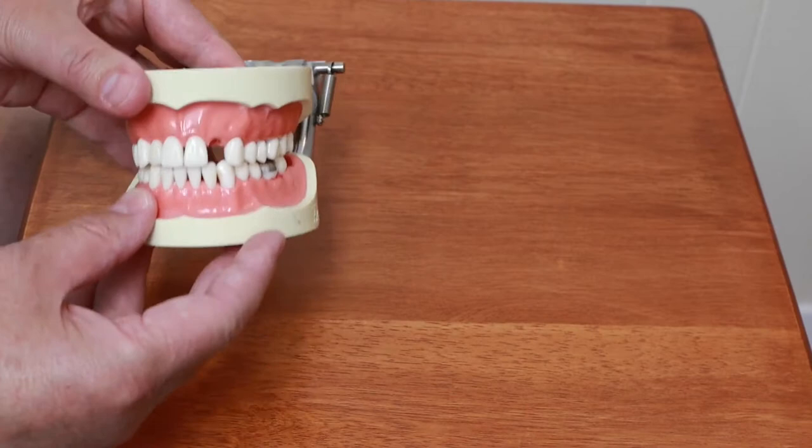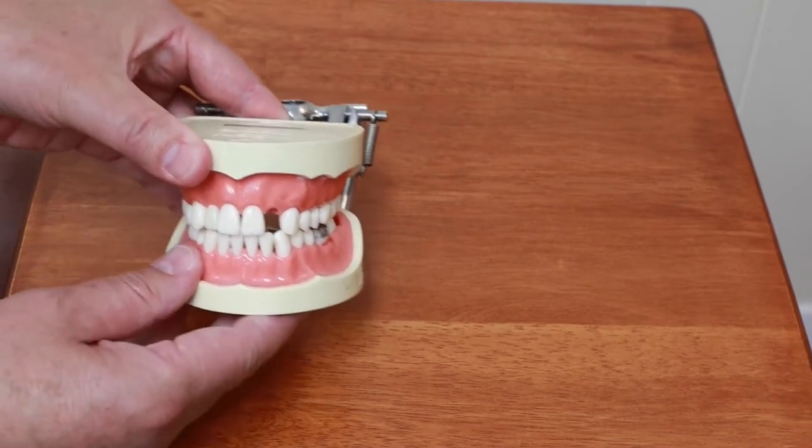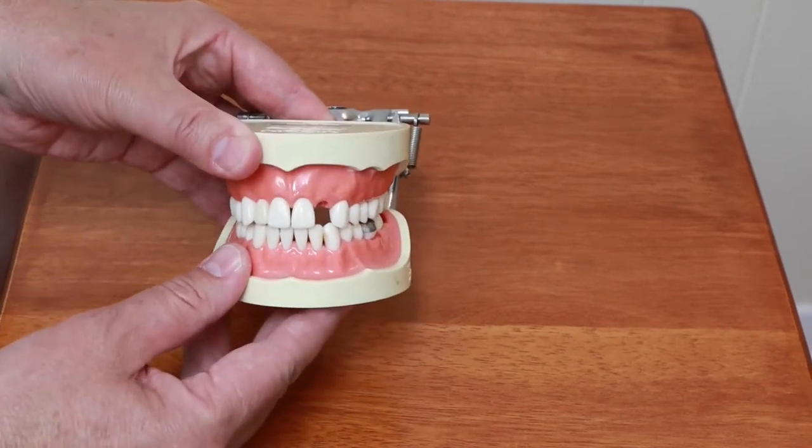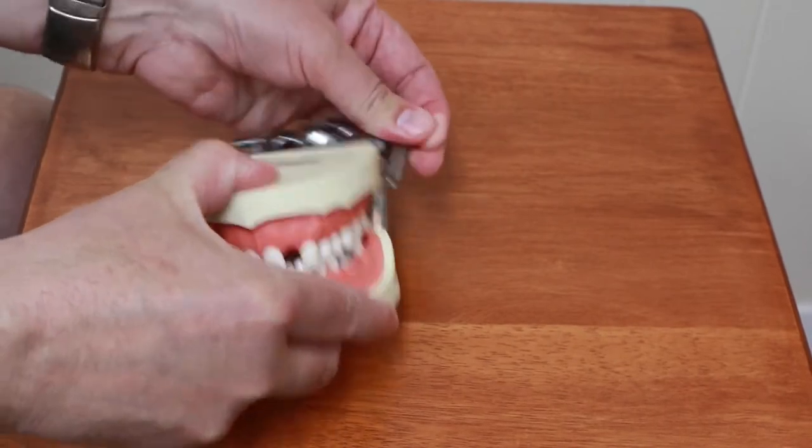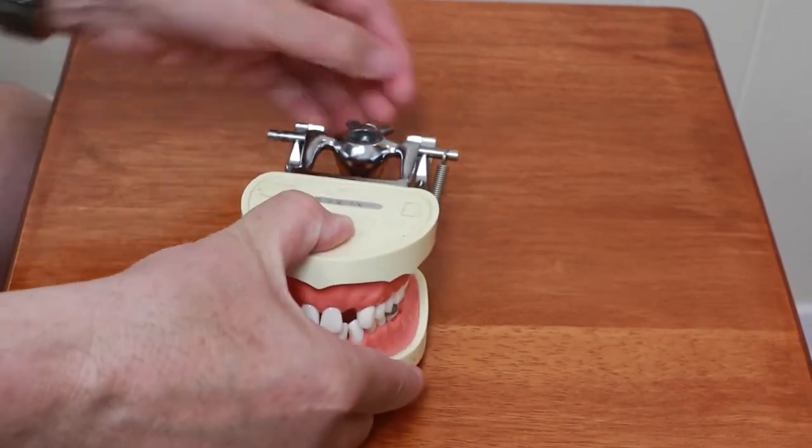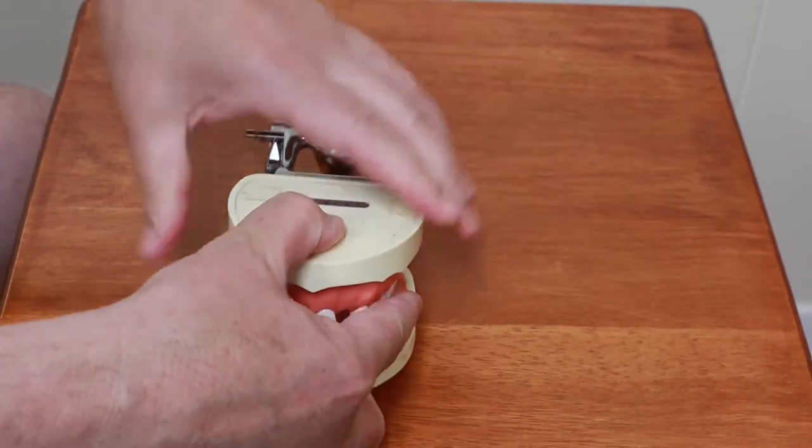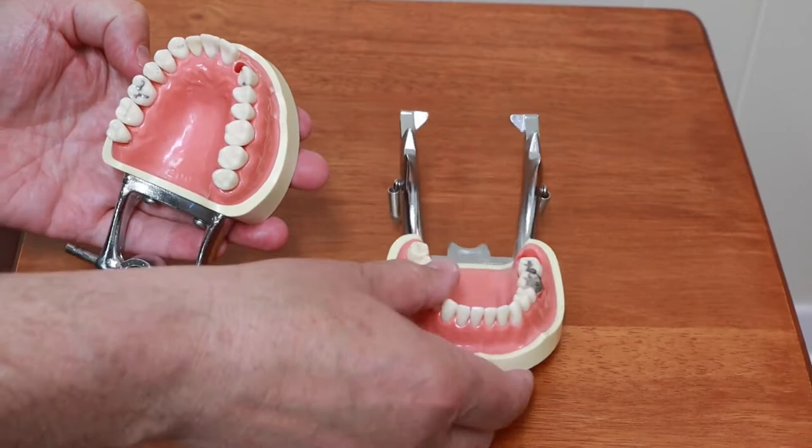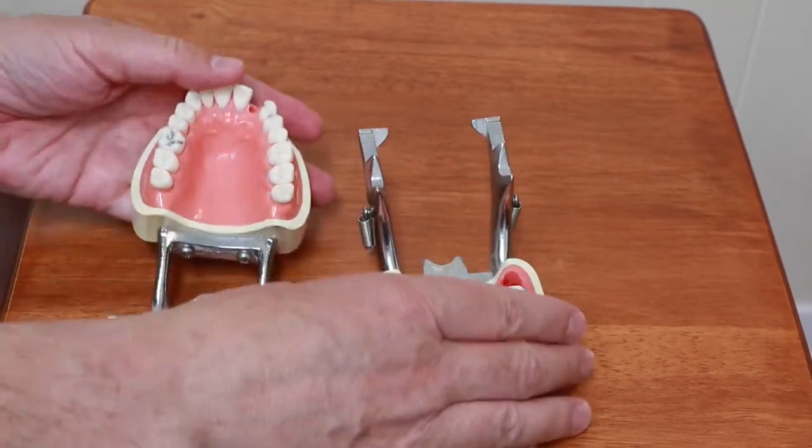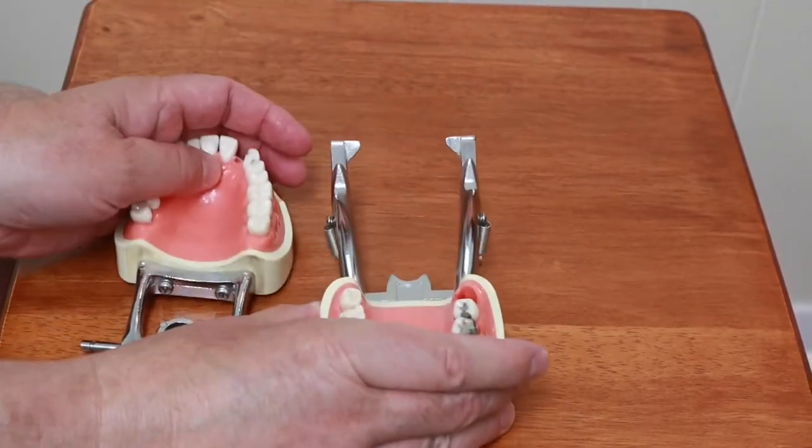The beauty of working on a typodont rather than on a live person is that I just undo a couple springs in the back and the two jaws come apart so I can more easily take a mold of his upper teeth and lower teeth.